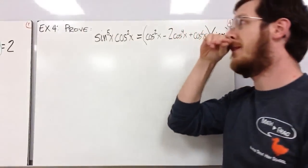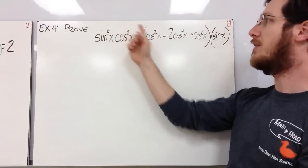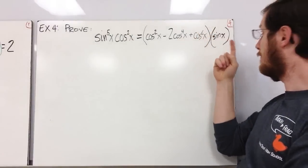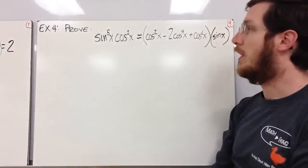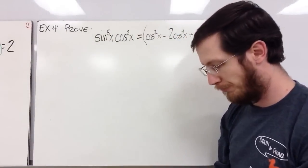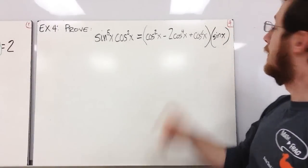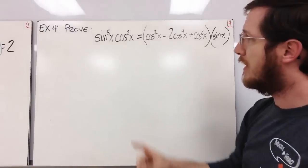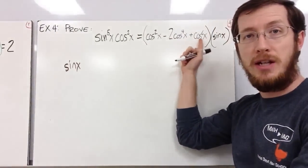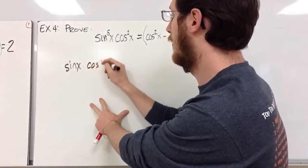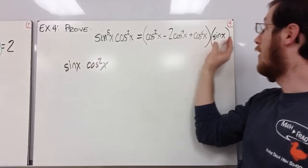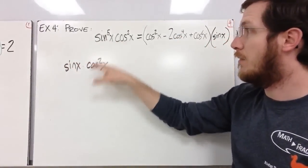Example four — last example we'll do together: prove that sin⁵(x)cos²(x) = (cos²(x) − 2cos⁴(x) + cos⁶(x)) · sin(x). The right side definitely looks more complicated, so I'll start there and try to manipulate it until it looks like the left side. I'm going to rewrite it, putting the sin(x) in front, and factor out cos²(x) since it's a factor of all three terms. Already this is looking good — keeping my target in mind, this structure is taking shape.